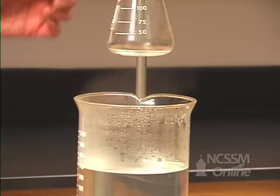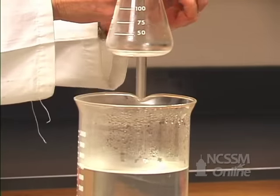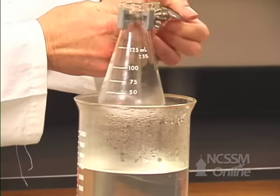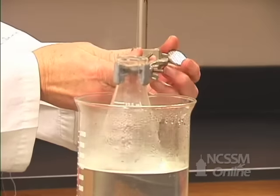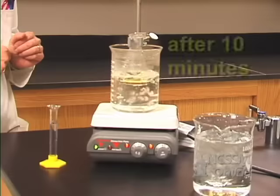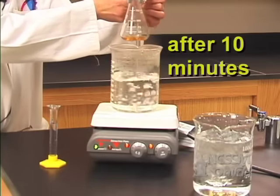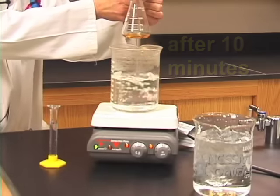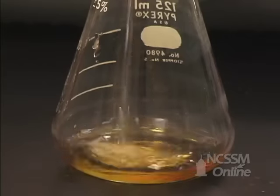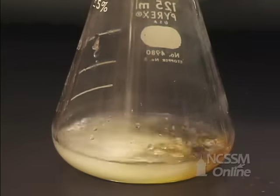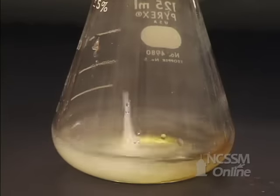We want to heat this in a boiling hot water bath for about 10 minutes. After 10 minutes, you can see that the color has a sort of a yellowish brown tint to it. Now we're going to add 10 milliliters of cold water.